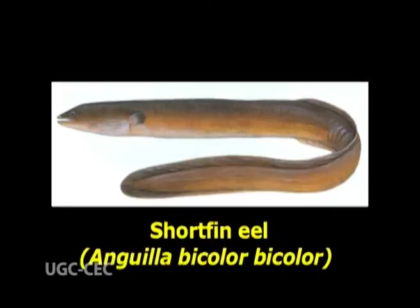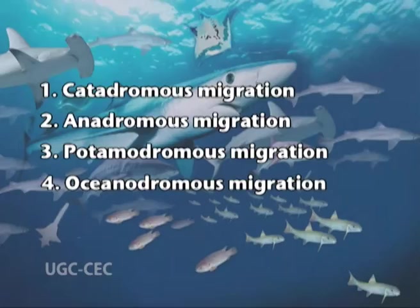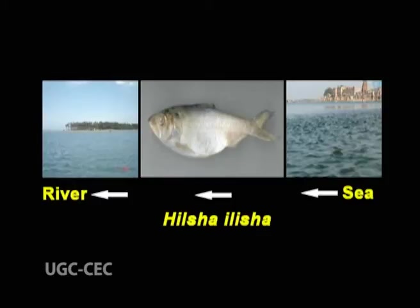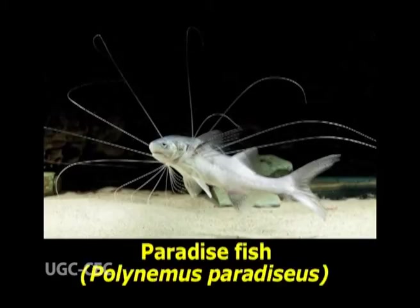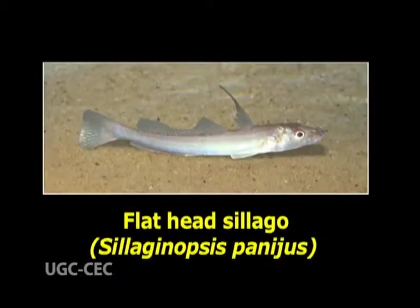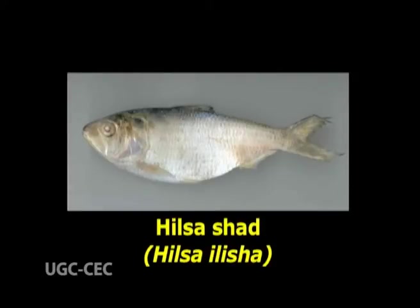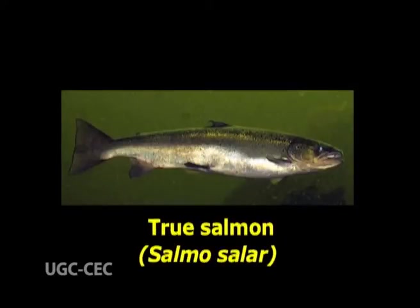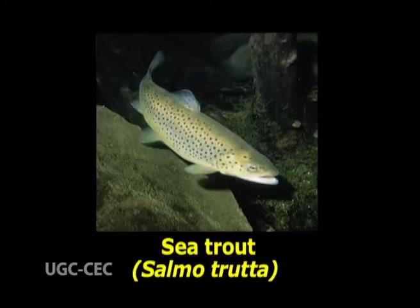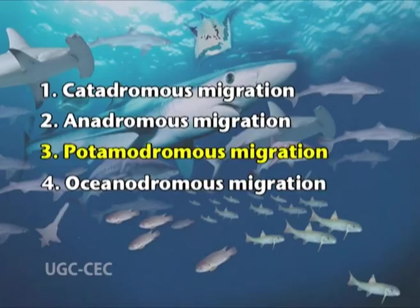Common eel, short-fin eel, etc. Next is anadromous migration — migration of fishes from the sea to the river system for spawning is called anadromous migration. Examples are paradise fish, flathead silago, sturgeon, toli shad, hilsa shad, true salmon, sea trouts, etc.